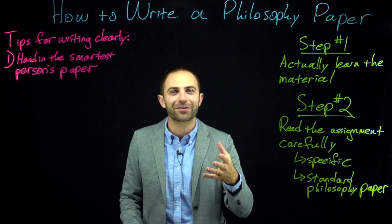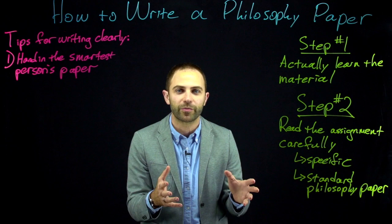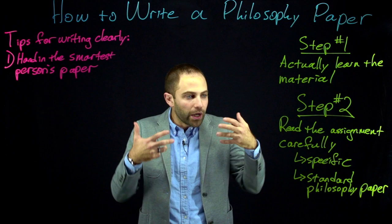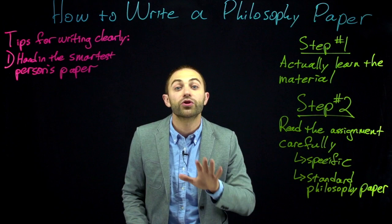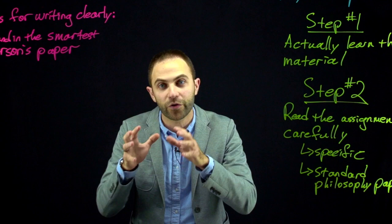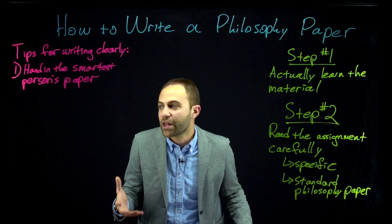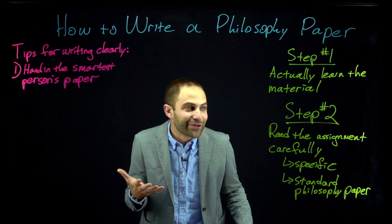Why is the beginning of the paper difficult to write and understand, but the end comes easily and is clear? Because in the process of writing, you come to figure out exactly what you want to say and how to say it. So if this happens to you, you need to go back to the beginning and take those early paragraphs and throw them in the garbage — because they are poison. They will ruin the whole paper. Those early paragraphs were written by someone who didn't know what they were trying to say, so you just can't include them in the final paper.